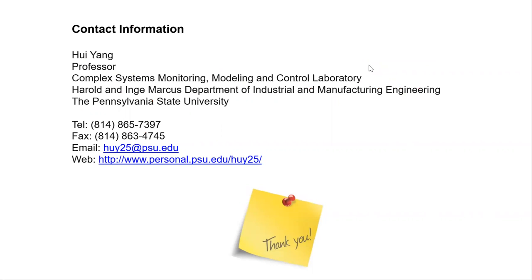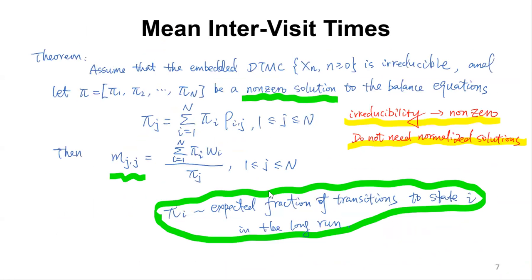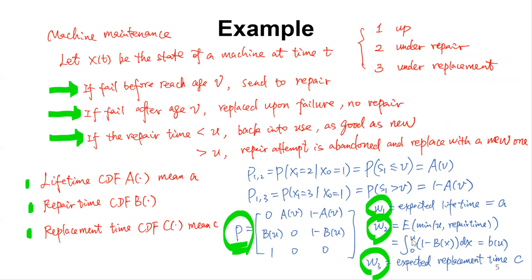This is the end of the semi-Markov process section. I want to mention that for a truncated random variable, E[min(X, c)] where c is a constant and X is non-negative can be derived as ∫₀ᶜ [1 - F(x)] dx. This derivation explains why we have the result for w2 = ∫₀ᵘ [1 - B(x)] dx in the machine maintenance example.